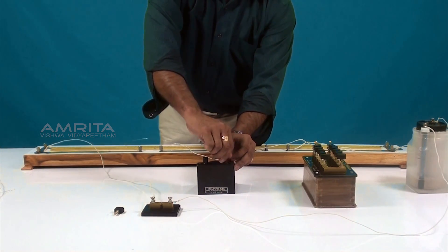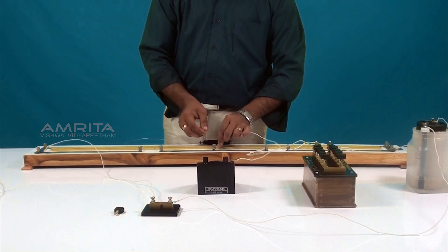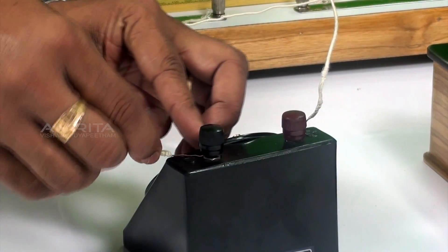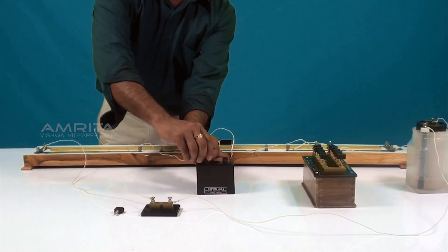With other connecting wires, connect the positive terminal of the galvanometer to the central terminal of the meter bridge and negative terminal of the galvanometer to the jockey.